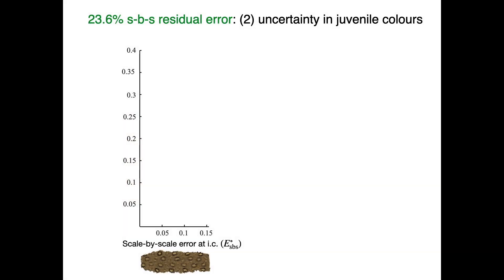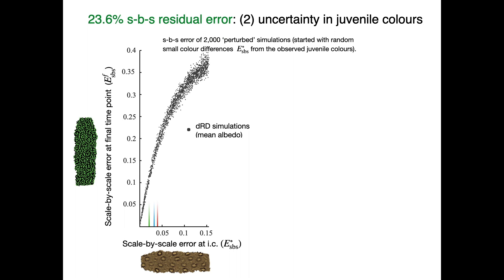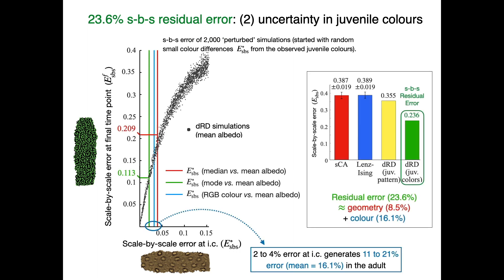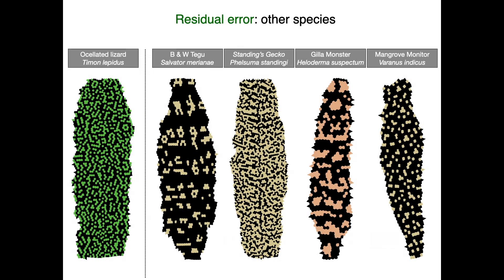We then show that this initial small error produces a mean error of 16.1% in the adult, explaining all of the remaining residual error. Remarkably, these results can be generalized to the four other species.